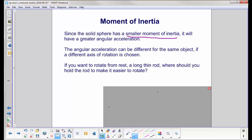The angular acceleration can be different for the exact same object if a different axis of rotation is chosen. If you want to rotate from rest, a long thin rod, where should you hold the rod to make it easier to rotate? You can actually do a quick experiment on this.